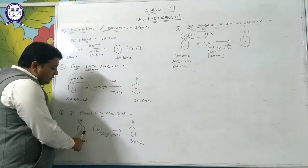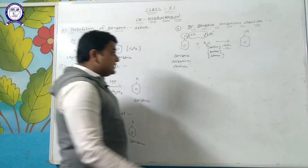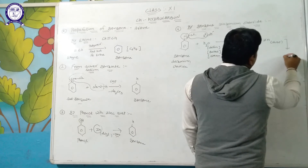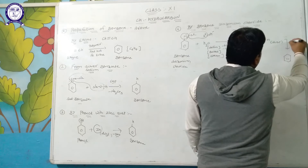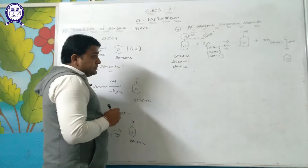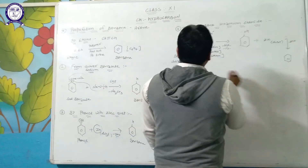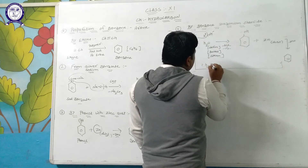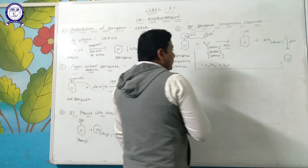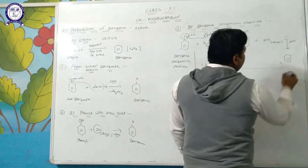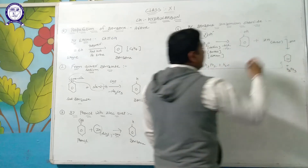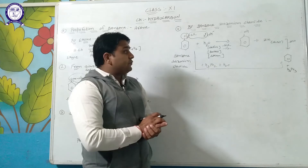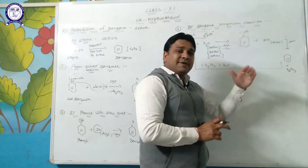In the second step, phenol reacts with zinc dust to give benzene and release ZnO. Alternatively, benzene diazonium chloride can be directly converted to benzene in one step using H3PO2 with H2O, producing H3PO3 as a byproduct.